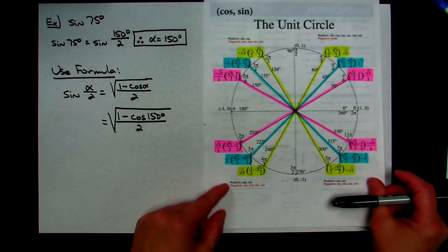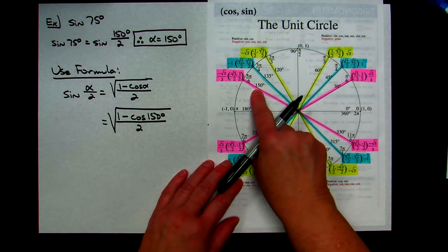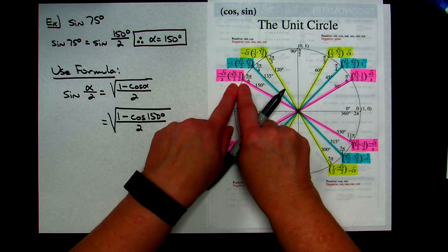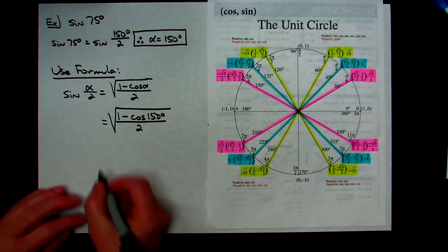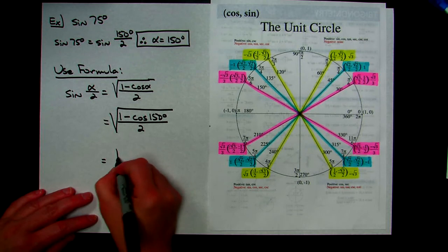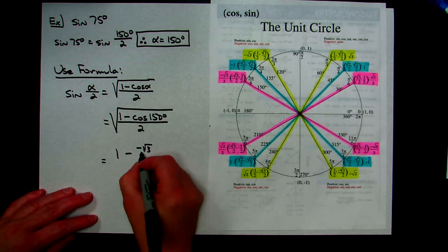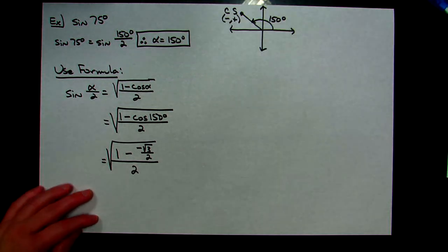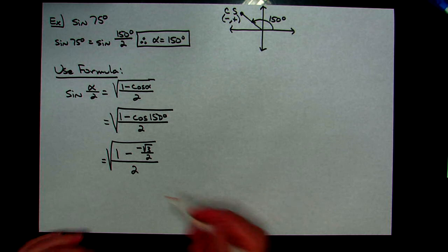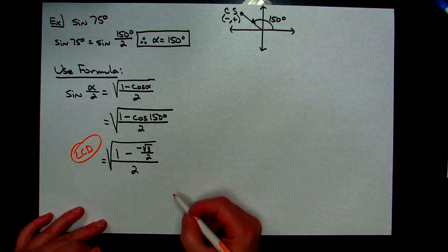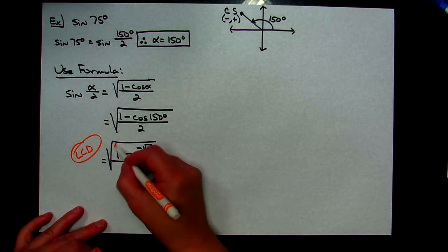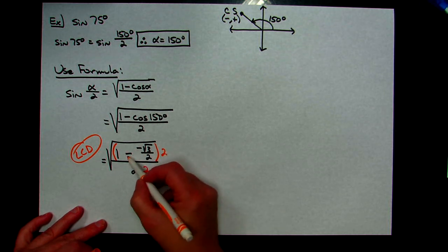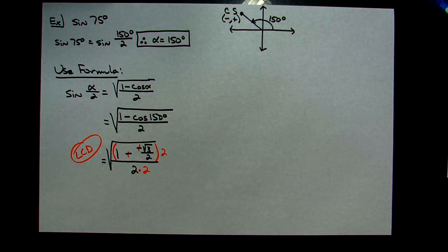Pulling out the unit circle, going to 150°, I need the cosine value — the first coordinate — which is negative √3/2. Replacing that inside: square root of (1 − (−√3/2)) all over 2. Again I have a complex fraction, so I'll multiply through by the LCD of 2. Multiplying numerator and denominator by 2, and the minus-negative becomes a plus.